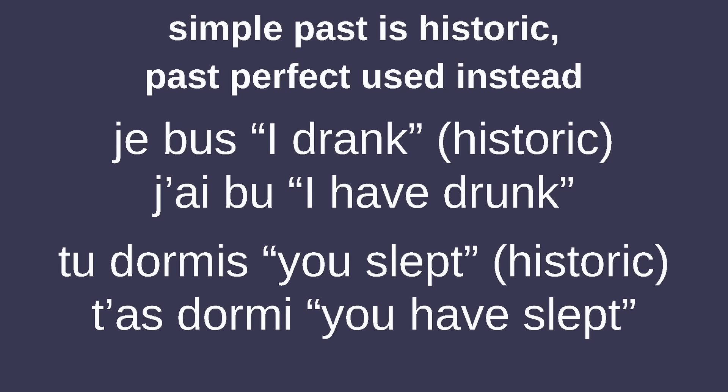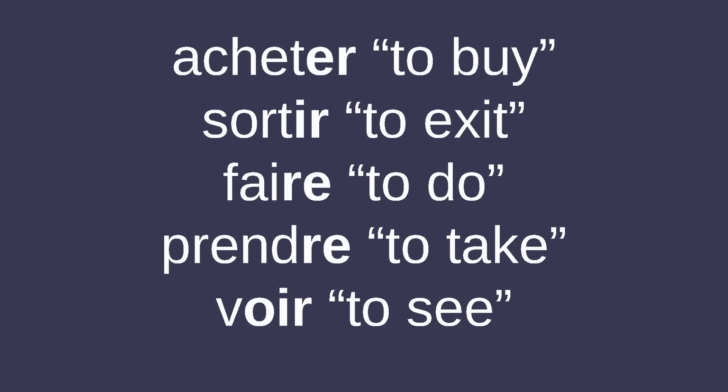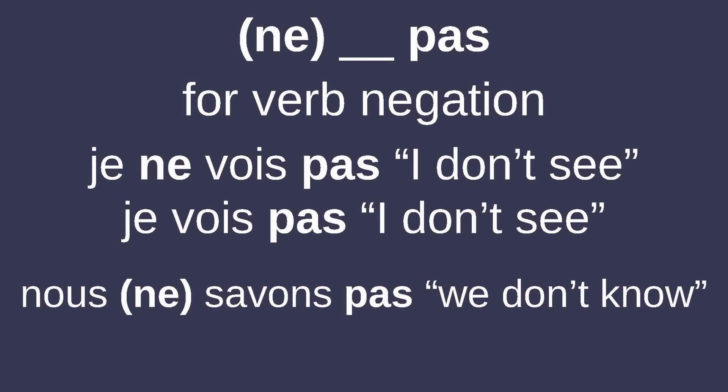The simple past is historic, and the passé composé is used instead nowadays, which is formed with a past participle preceded by 'avoir' for most verbs and 'être' — meaning 'to be' — for some verbs of motion. French infinitives can end with -ET, -IR, -RE, or -OIR, but can't end in -AR, unlike in most Romance languages. Much like in Occitan, verbs are negated by placing 'ne' before them and 'pas' after them, though 'ne' is typically dropped.